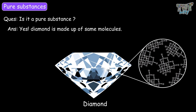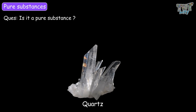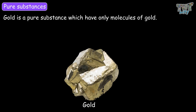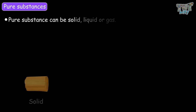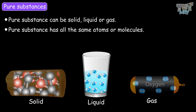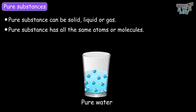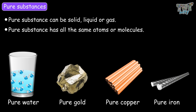Let's have some more examples of pure substances. Quartz — is this a pure substance? Yes, it only has one type of molecule, which is quartz. Gold is also a pure substance, which has only molecules of gold. Iron is a pure substance, which only has molecules of iron. So pure substances can be solid, liquid, or gas — it's just that pure substances all have the same atoms or molecules. Examples of pure substances are pure water, pure gold, pure copper, and pure iron. So now we know what pure substances are.